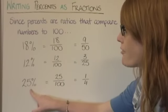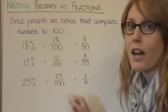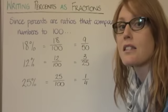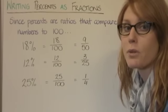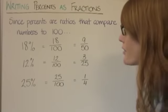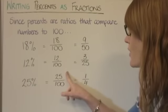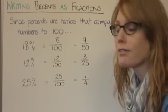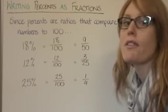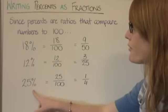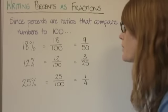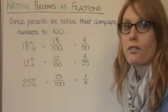25% is the same as 25 over 100. The greatest common factor in this case is 25, so we divide the numerator and the denominator by 25. 25 divided by 25 is 1, and 100 divided by 25 is 4. So 25% written as a fraction in its simplest form is 1 fourth.